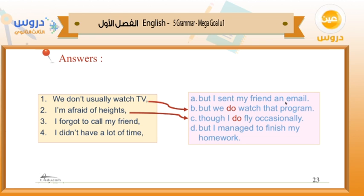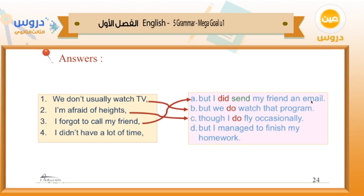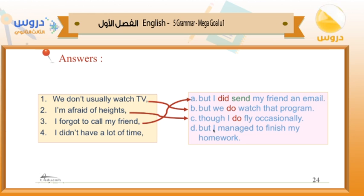Number three: 'I forgot to call my friend, but I sent my friend an email.' Since the sentence is in the past, we use emphatic 'did' and change the verb to the infinitive: 'I forgot to call my friend, but I did send my friend an email.' Number four: 'I didn't have a lot of time, but I managed to finish my homework.' Rewritten: 'I didn't have a lot of time, but I did manage to finish my homework.' After 'did,' we use the infinitive.